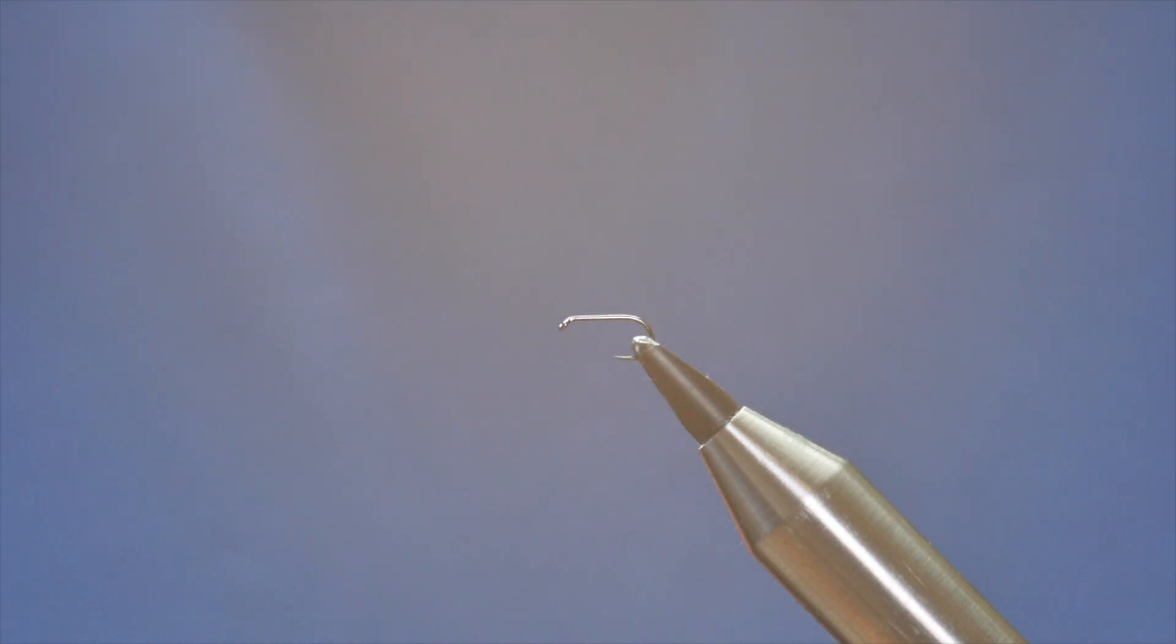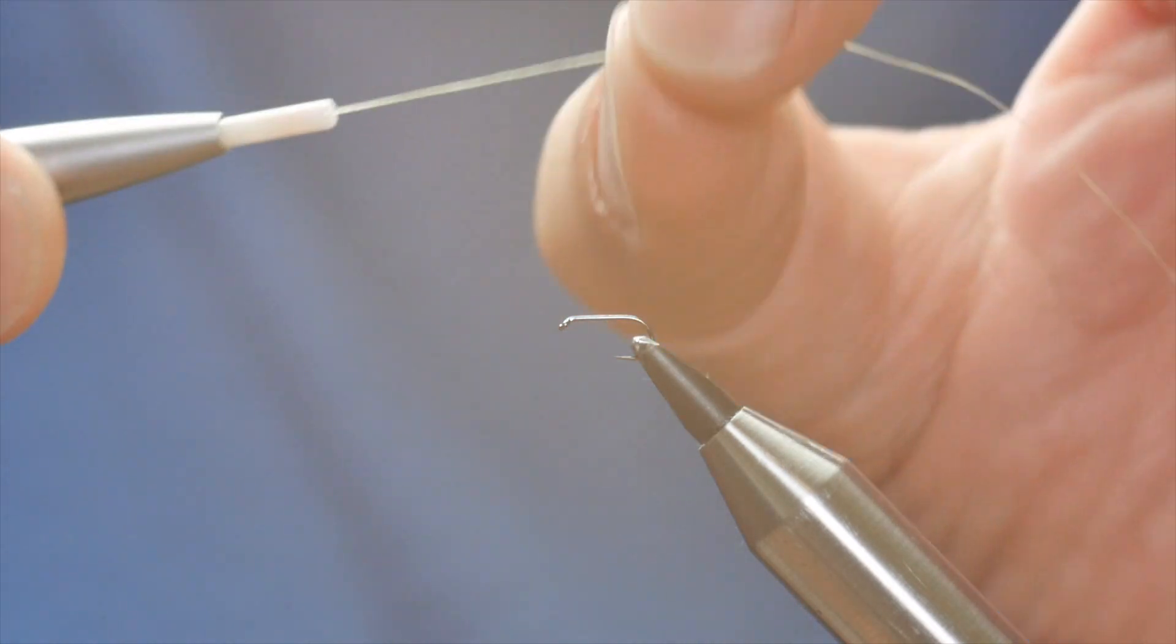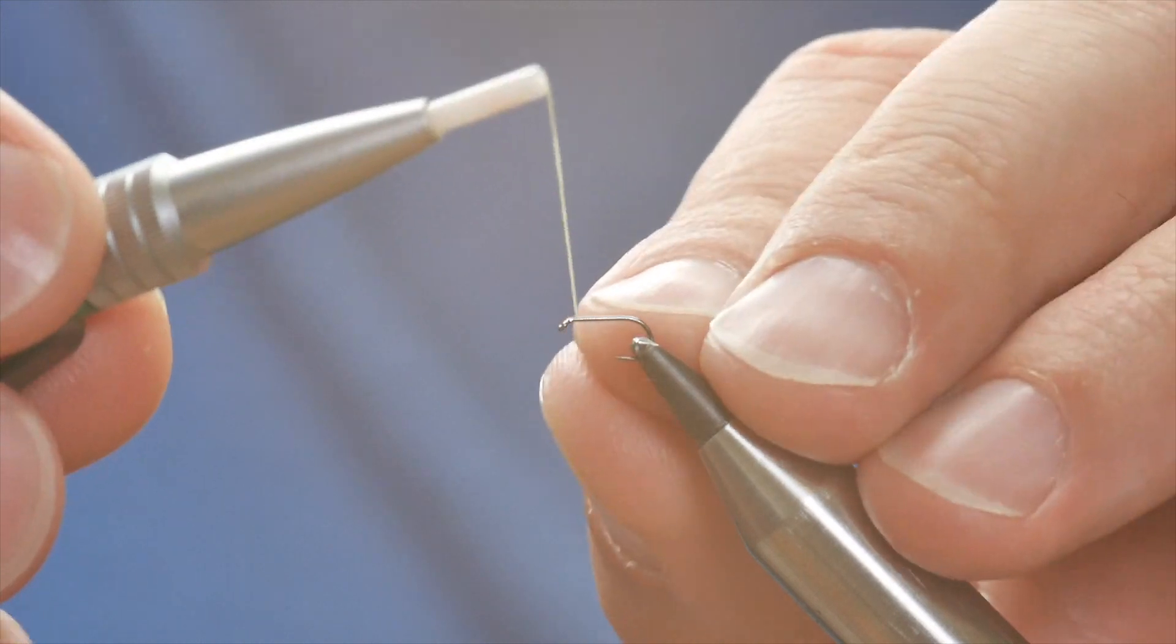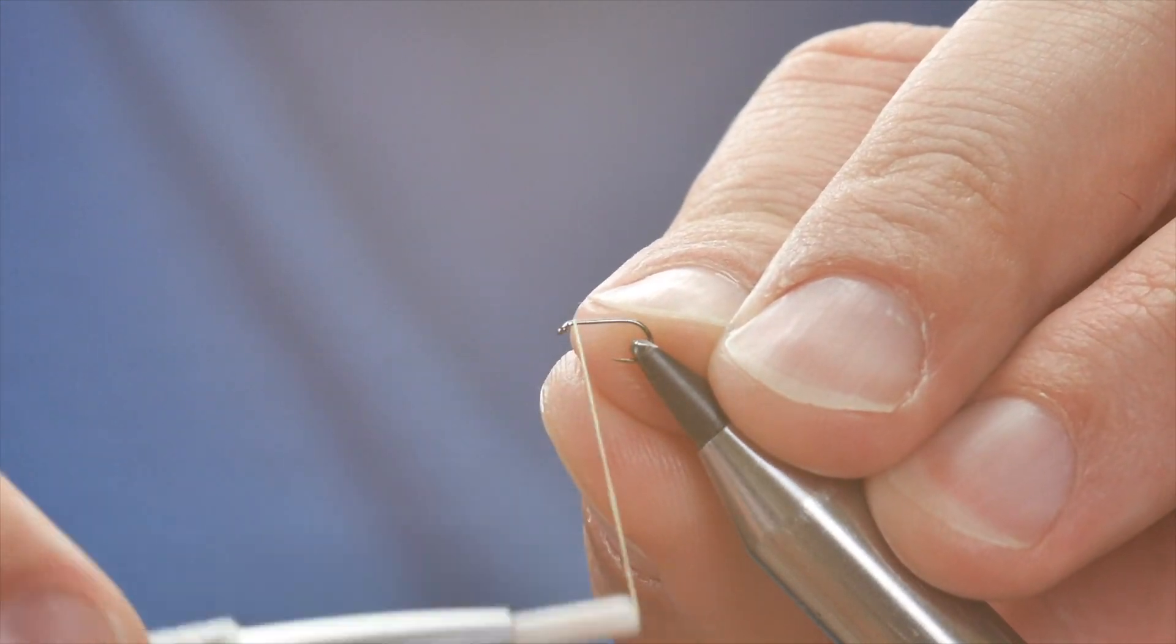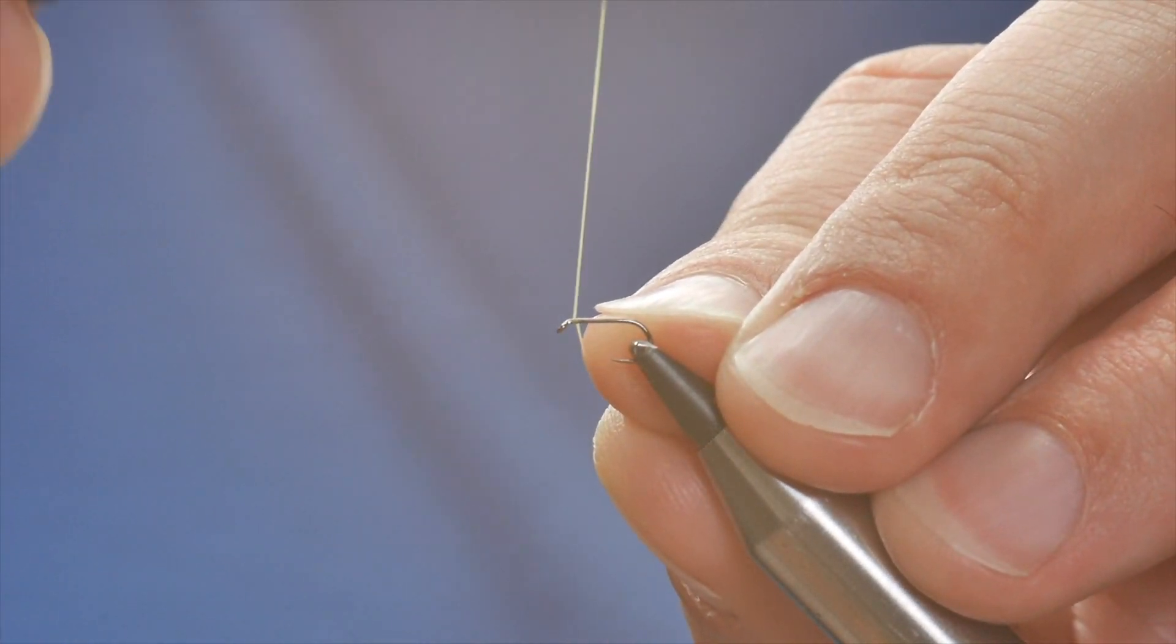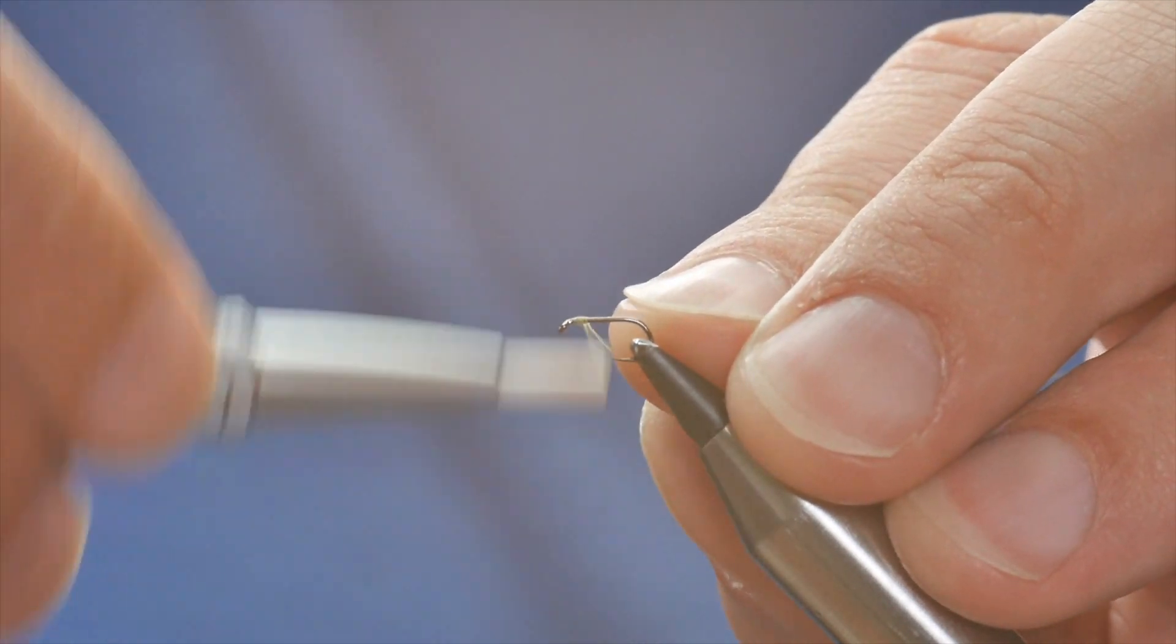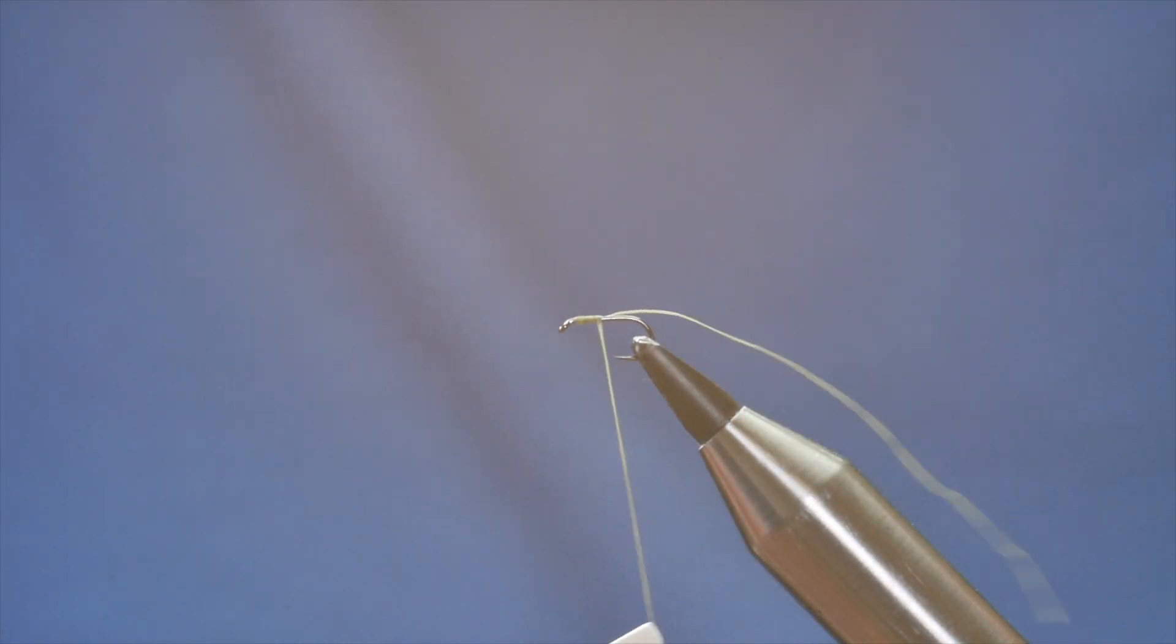First thing I'm going to do is get plenty of wax onto my thread. I'm just going to rub my fingers through that. So I'm generating heat here and it helps the wax bed in so I've not got big clumps of wax on my hook. I'm going to catch it in about a millimeter back from the eye and just get a couple of turns on.